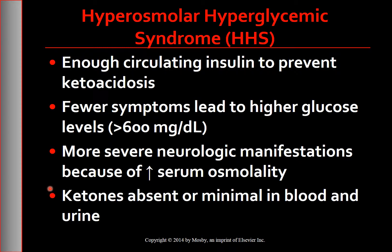Lab values in HHS include a blood glucose level greater than 600 mg/dL and a marked increase in serum osmolality. Ketone bodies are absent or minimal in both blood and urine.